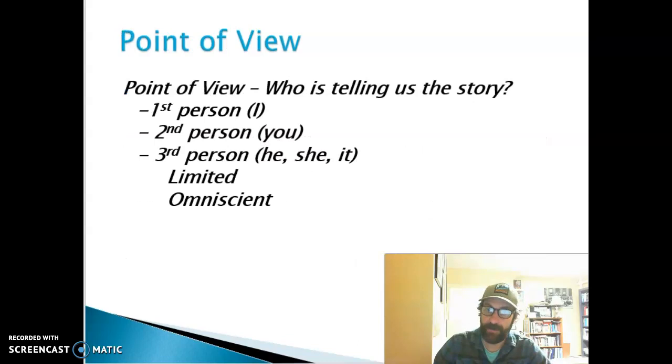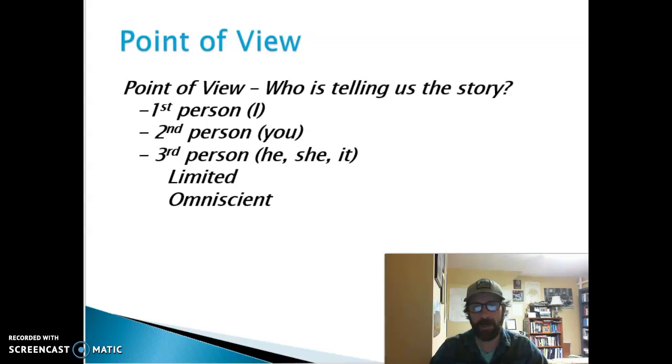Point of view is who's telling us the story. In a play, this is going to be a bit different, but if we're reading a novel, we're talking about first person or second person or third person point of view. First person is the I perspective. 'I went to the store. I bought a candy bar.' The third person is the outside perspective. 'He went to the store. She went to the store. She bought a candy bar.'